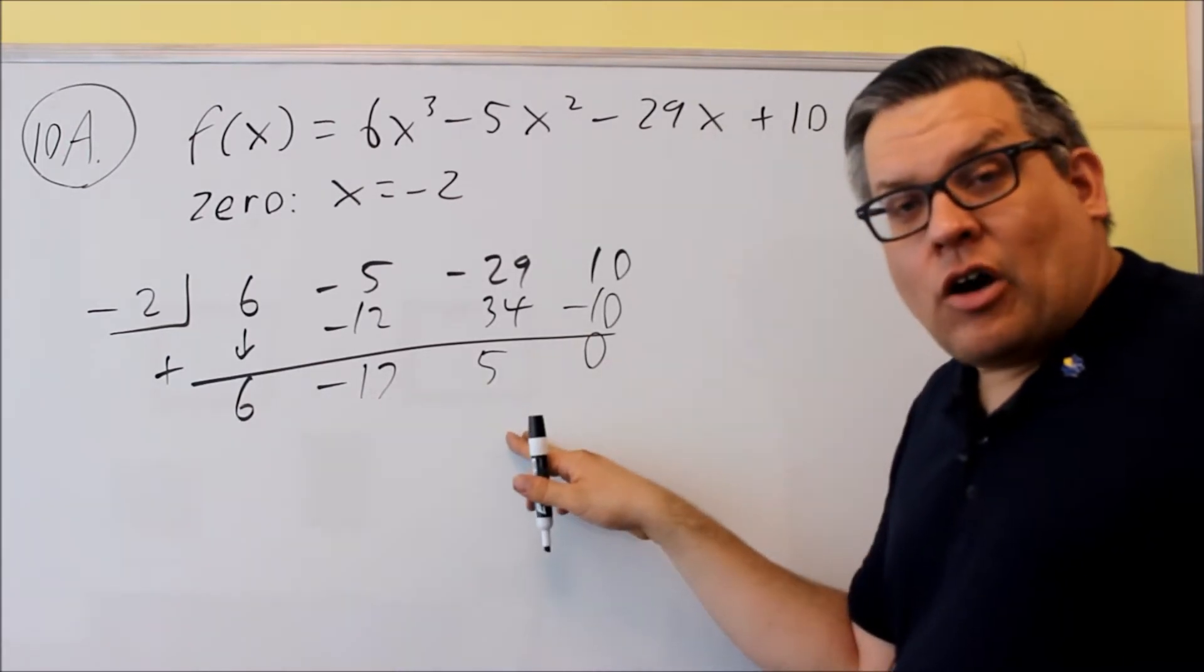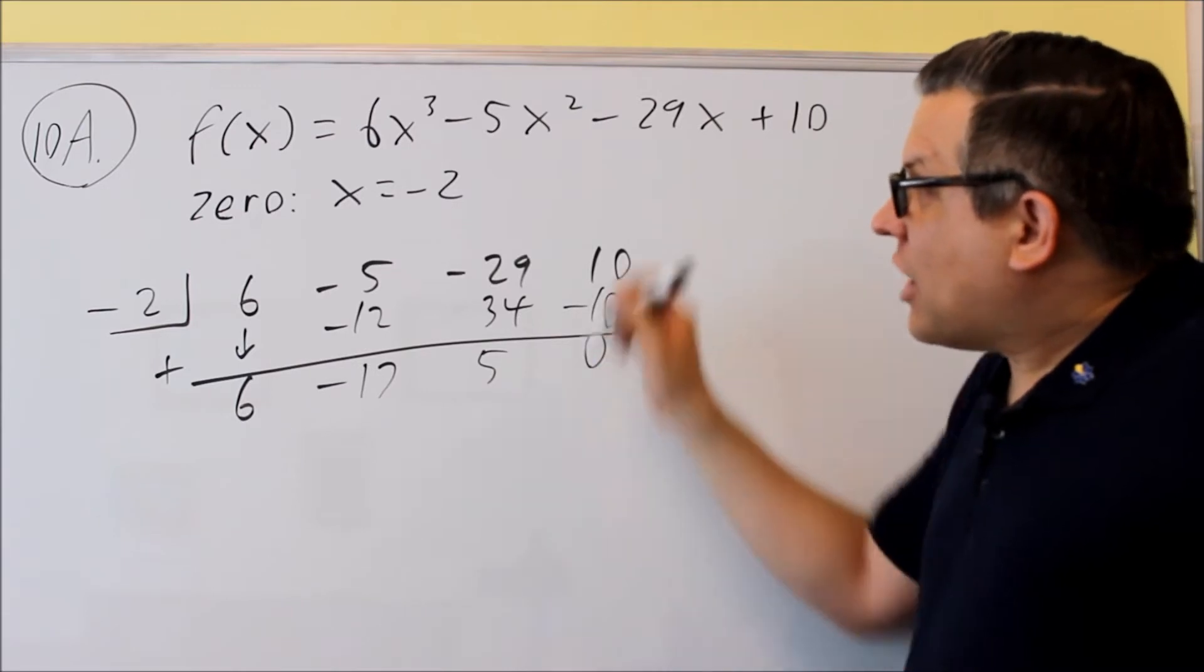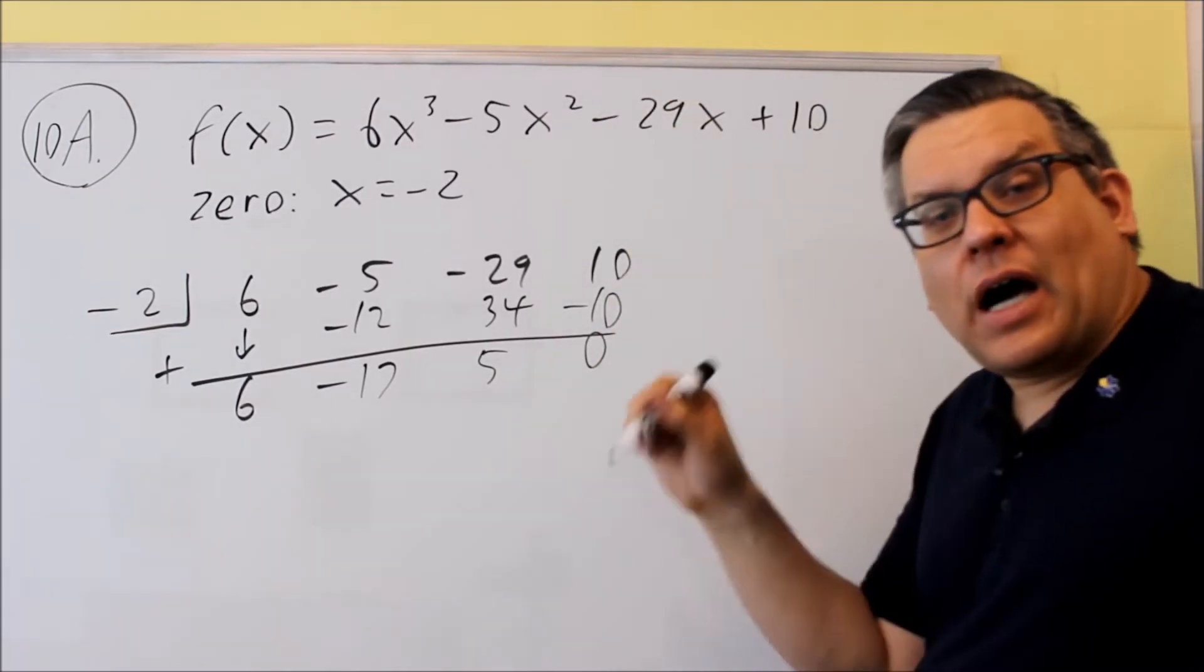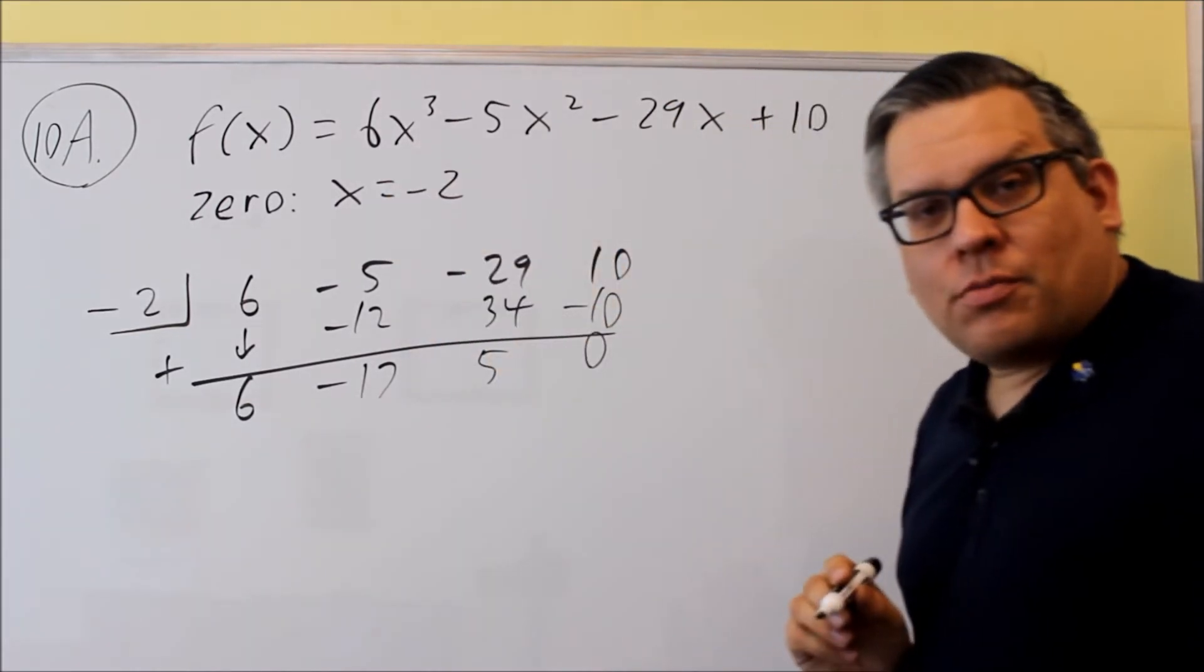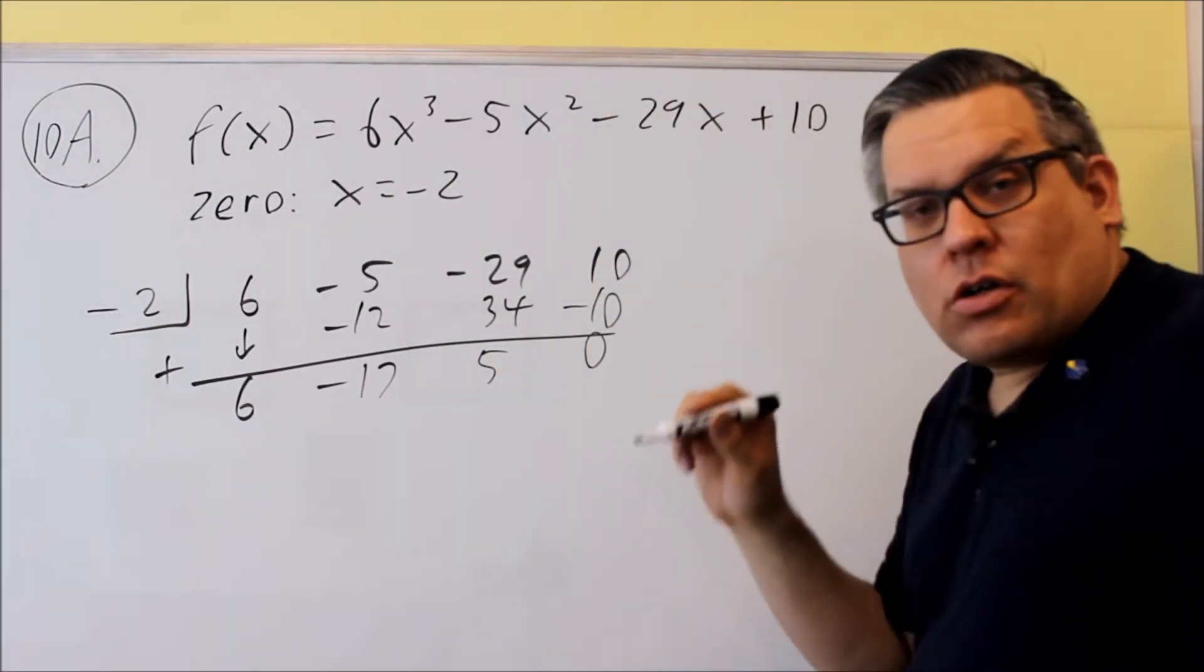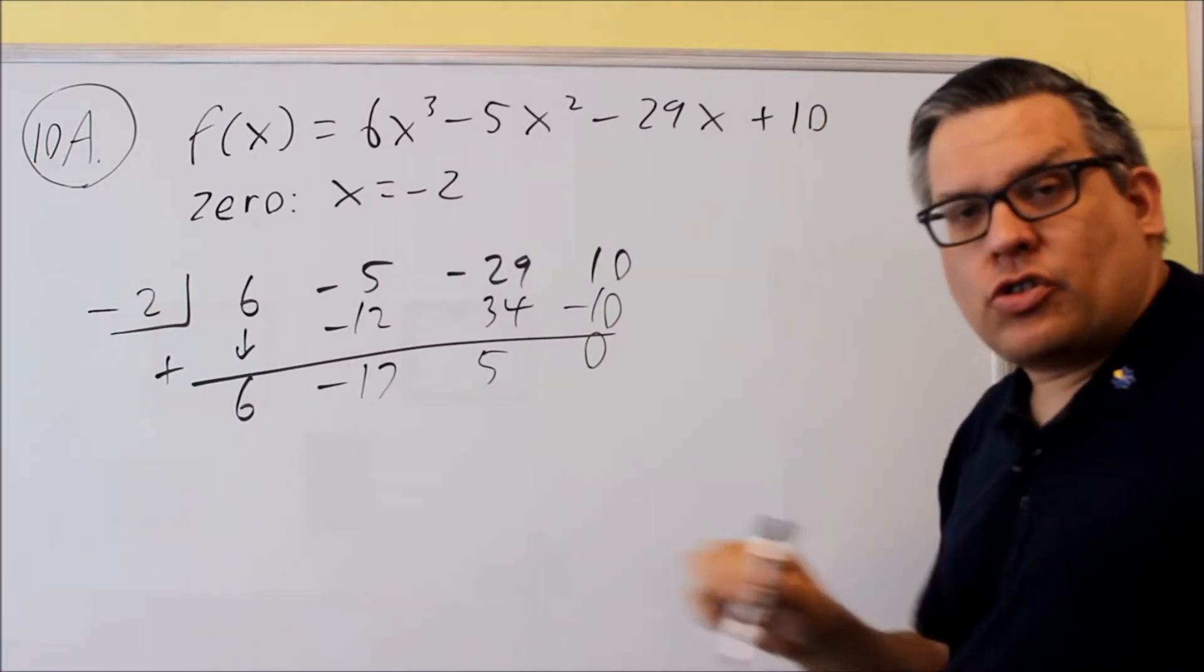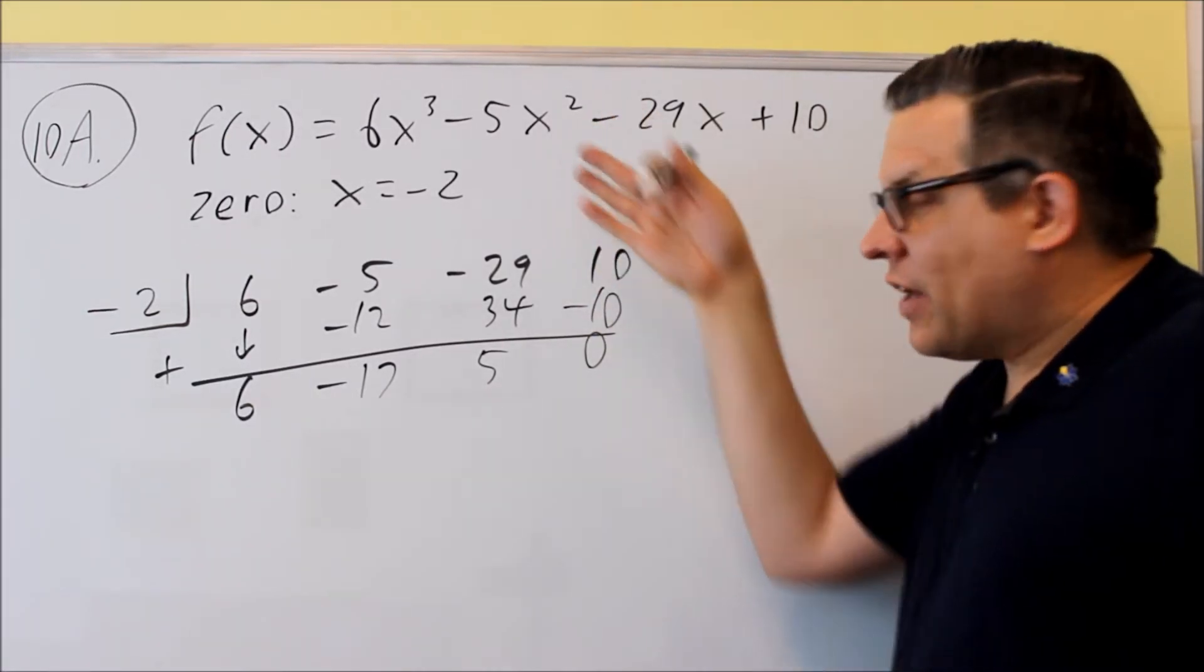We can change this now into a quadratic. Every time you do synthetic, it takes the power down by 1. So if they give you a cube, they'll give you 1 zero. But if you have a fourth power, then you'd be given two zeros and you'd do synthetic twice. But this one we only have to do synthetic once.